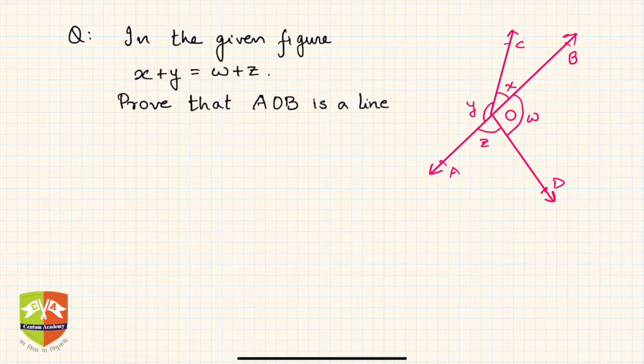So how to go about it? Now, x plus y equals w plus z. Always remember, if someone is asking you to prove AOB to be a line, what should the basic concept be? AOB is a line means any point on the line will make 180 degrees.